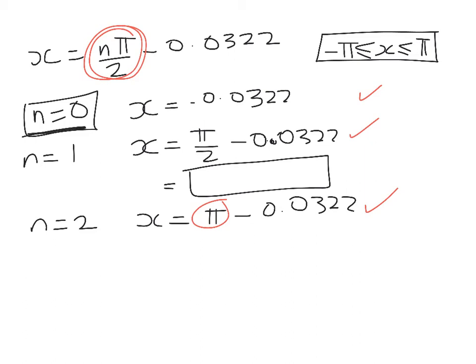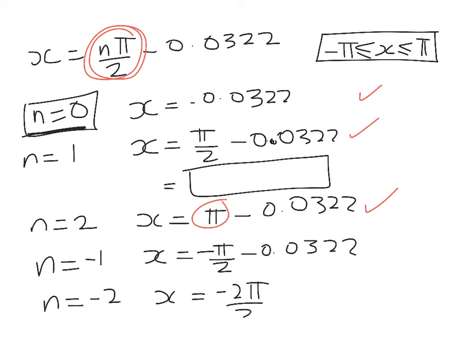So now I start looking at the negative end. I'm going to go n equals negative 1. x is negative π on 2 minus 0.0322. And lastly, I'm going to look at n equals negative 2 and just check. So it'll be negative 2π on 2 minus that. So that one was in, but this one is no good because it is less than negative π. So what we found there are four particular solutions.